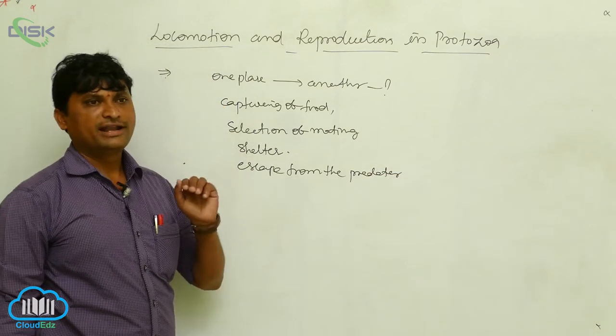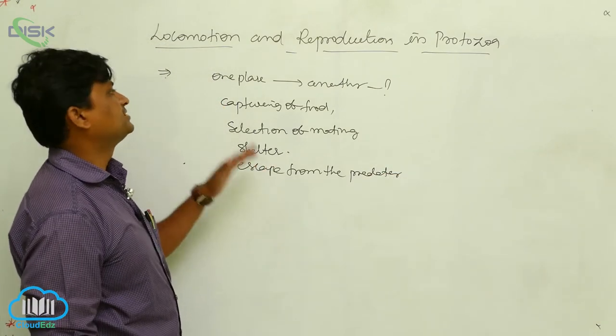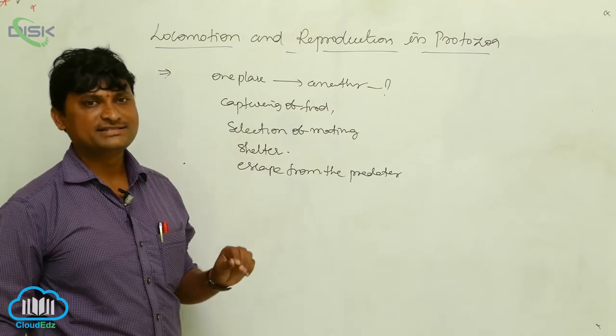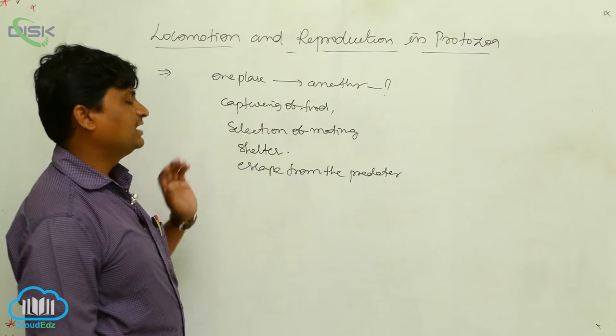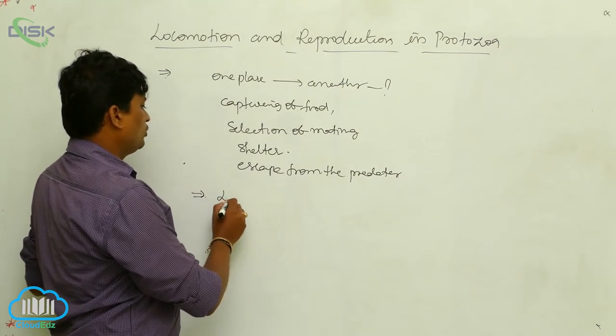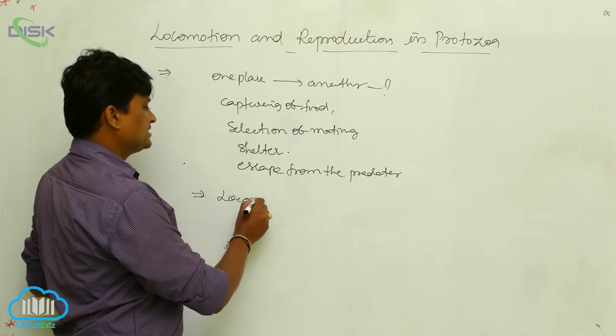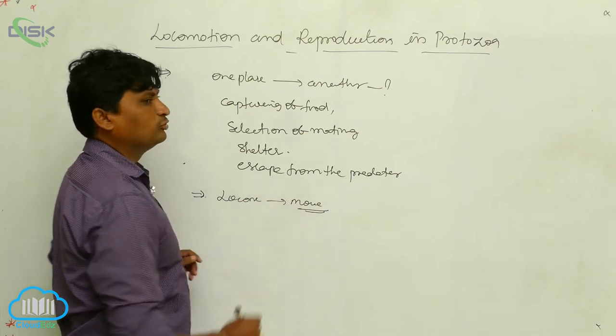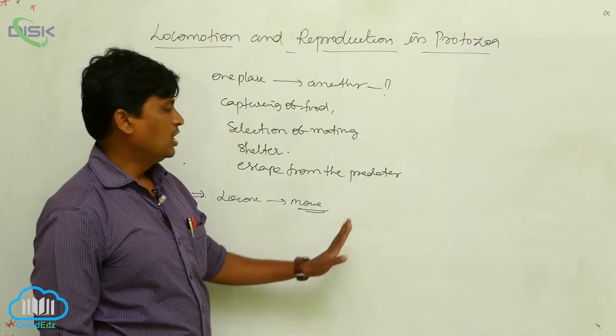Therefore, organisms must show locomotion. But organisms also show movements. But movements are not considered as locomotions. When we clearly observe the statement, all locomotions we consider as a movement, but all movements we should not consider as locomotions.